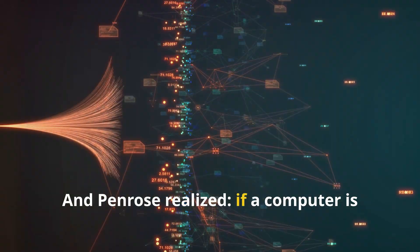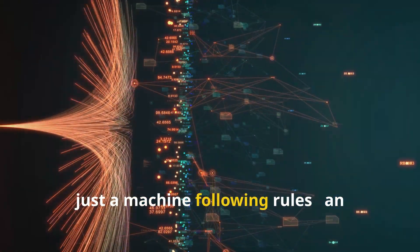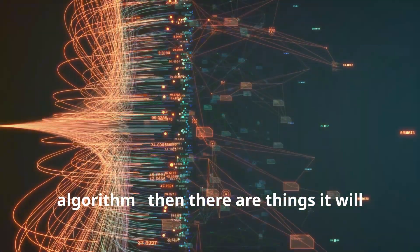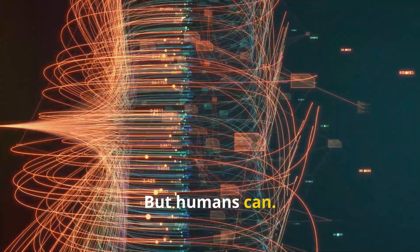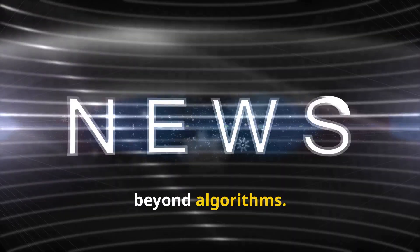It meant that mechanical rules alone can never capture the full scope of mathematical truth. And Penrose realized, if a computer is just a machine following rules, an algorithm, then there are things it will never understand. But humans can. And that means something in us goes beyond algorithms.